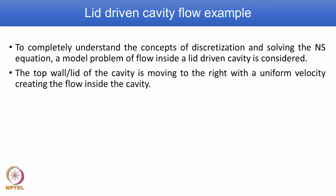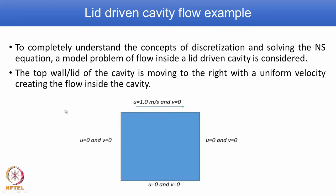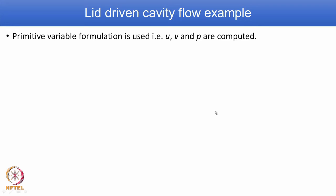For this problem, the top wall — the lid of the cavity — is moving to the right with a specific uniform velocity, thus creating flow inside the cavity. u equal to 1 meter per second is the specific velocity given, and the lid is moving from left to right. We can use a vorticity stream function formulation or solve using primary variables. The primary variables are u, v, w, and pressure. Because we consider a 2-dimensional situation, we have only u, v, and pressure.